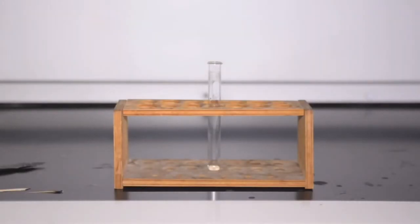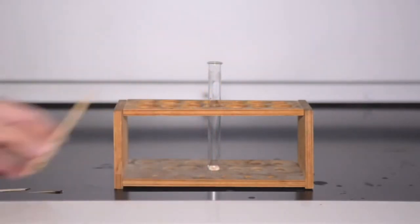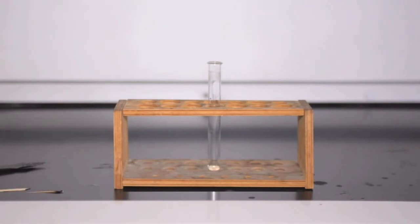During Reactions 4 and 5, splint tests will be used to detect the presence of hydrogen or oxygen gas. These tests are performed with the help of a thin, dry piece of wood, the splint. The splint is either a glowing splint or a burning splint, which we will demonstrate.